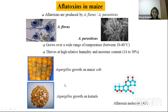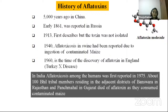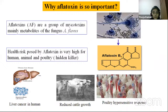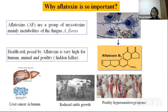Looking back historically, reports of aflatoxin were seen in China 5,000 years ago. In 1913 the molecule was considered a toxin capable of causing aflatoxicosis from consumption of contaminated maize. In England, Turkey X disease was reported from consumption of aflatoxigenic grains. In Indian context, many tribal people of Rajasthan and Gujarat died due to consumption of aflatoxin-contaminated maize. Aflatoxin is a hidden killer molecule affecting not only poultry and cattle but also humans, and is a potent carcinogen capable of causing liver cancer.